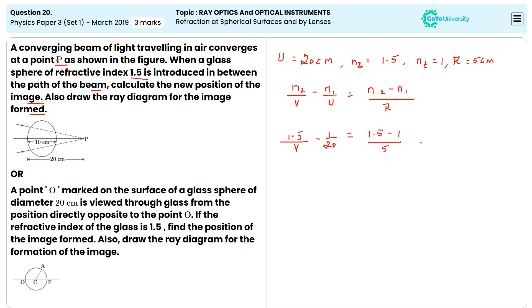We get that V equals 10 centimeters. Okay. Also, draw the ray diagram for the image formation. This is the ray diagram of the image formed. Or, second question.